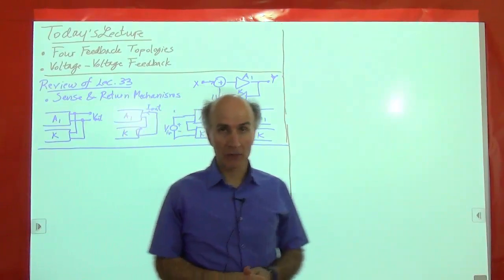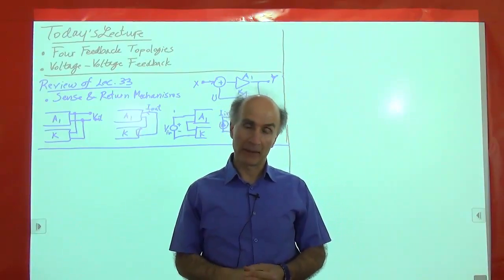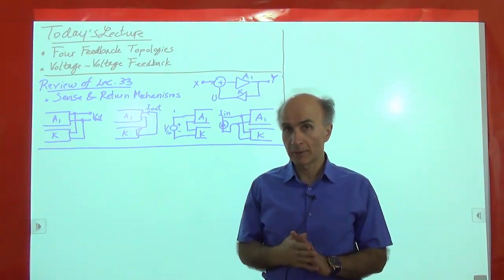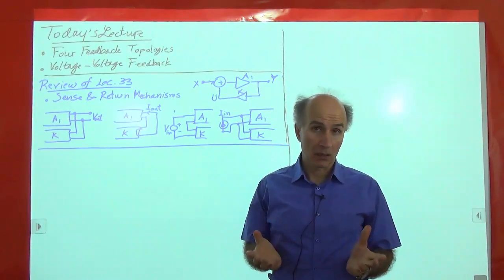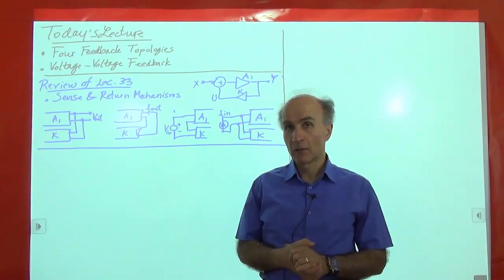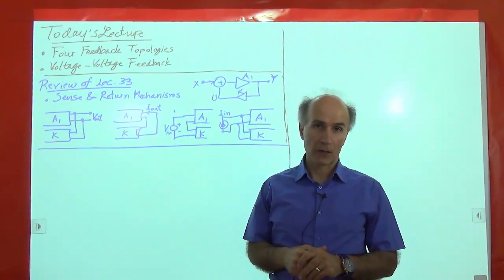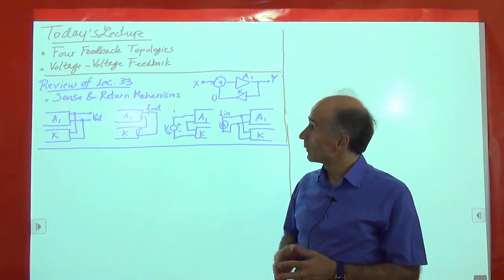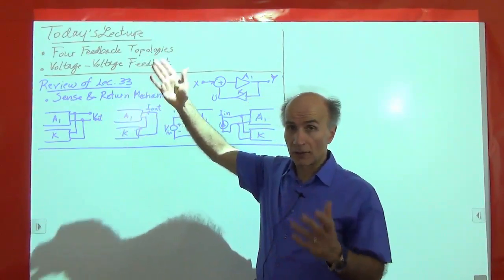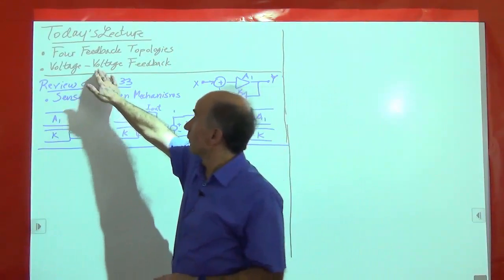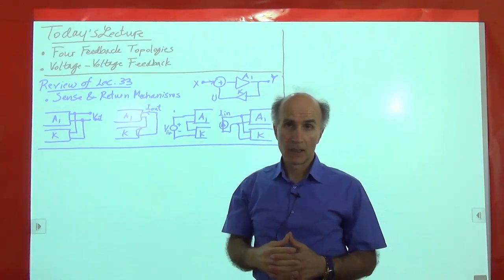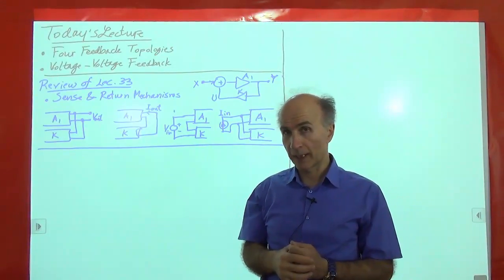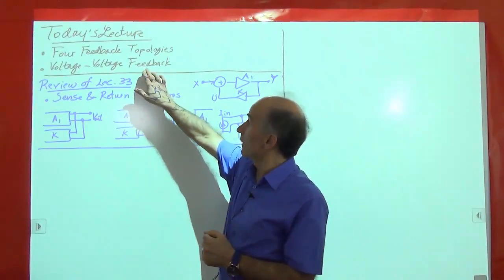Welcome to Electronics 2. This is lecture number 34, and I am Beezad Razavi. Today, we will continue to look at feedback, and we'll focus on four types of feedback topologies that we encounter often in practice. These are the four canonical topologies that help us understand how we will go about analyzing a given circuit in terms of feedback. We'll look at these four topologies at the general level, then go into voltage-voltage feedback and try to derive its properties — what benefits negative feedback provides, and perhaps what disadvantages we have.